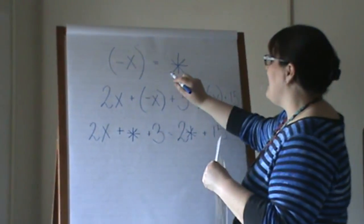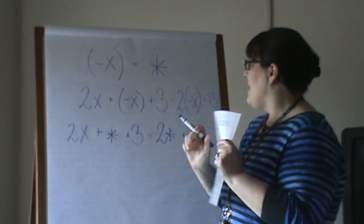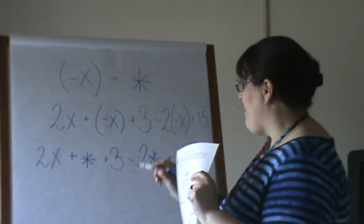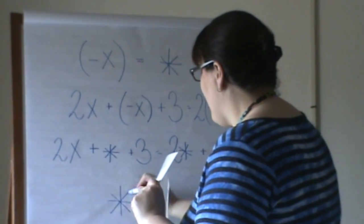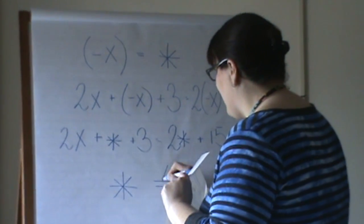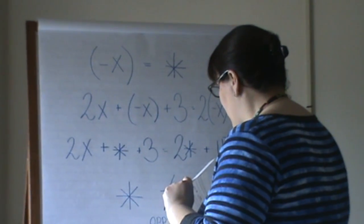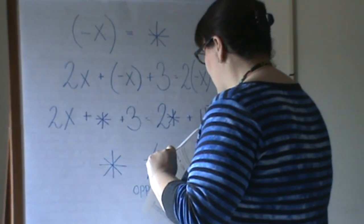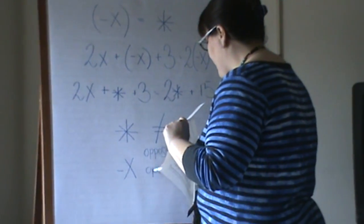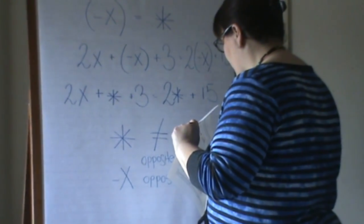So, again, negative x equals the same thing as the star, the asterisk that we use for the star. And we know that because we know that the asterisk or the star is the opposite, it does not equal the x. It's the opposite of. So, that leaves us with this, negative x is also the opposite of x.